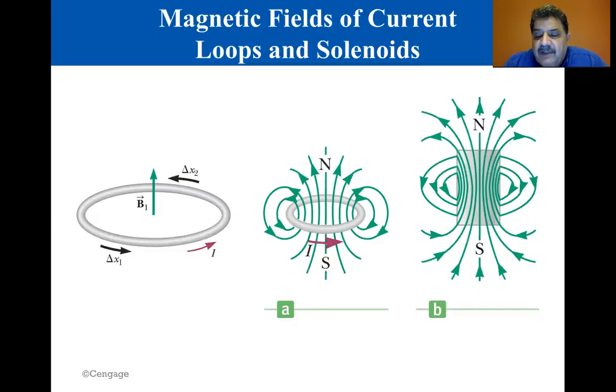Notice that a segment of length delta X2 at the top of the loop also contributes to the field at the center, which increases its strength. The field produced at the center by the segment delta X2 is the same magnitude as B1 and is also directed upward. In the same way, all other segments like these contribute to the field. The net effect is a magnetic field with a current loop as shown in the middle figure.